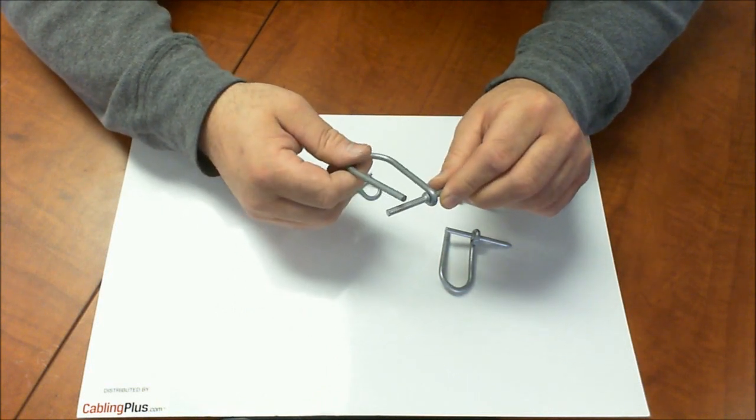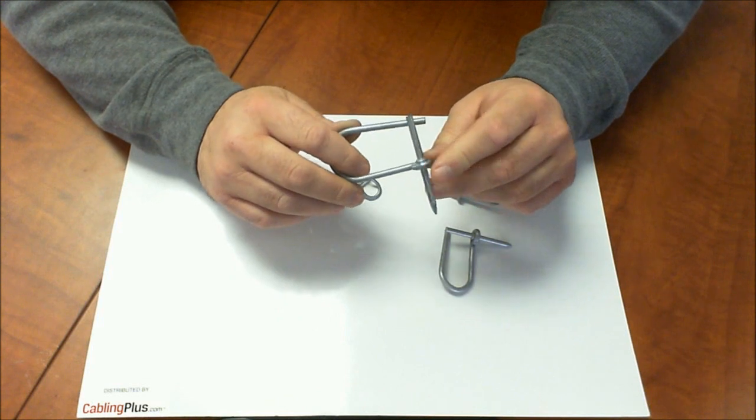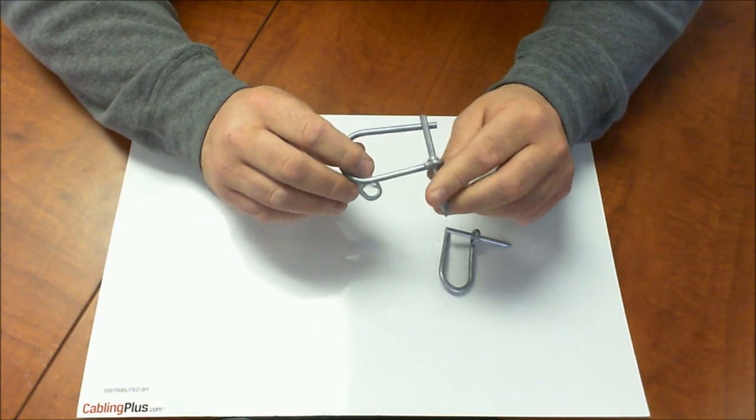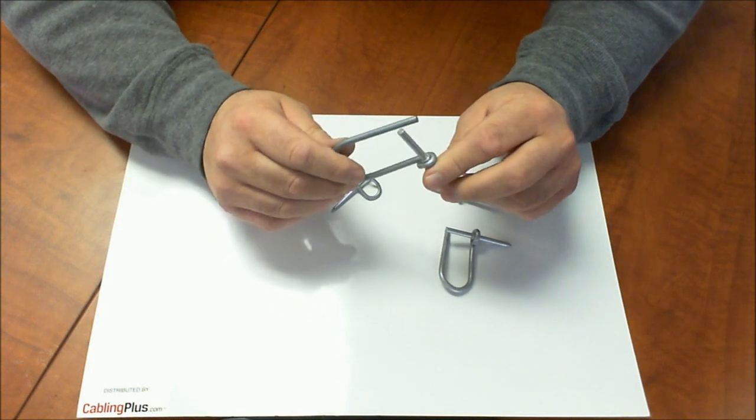As you can see they've got an open loop, you just put the cables right into them. They're real simple to install, there's no screwing down, there's no installing anything. You just drive them right into a wood surface and start routing your cable.